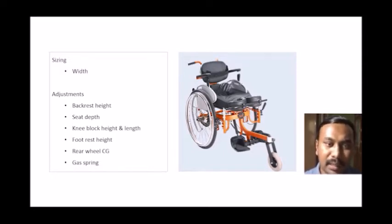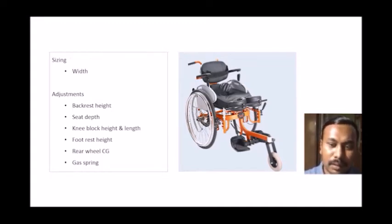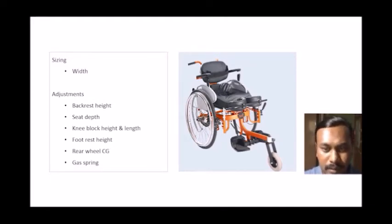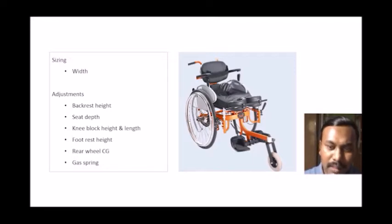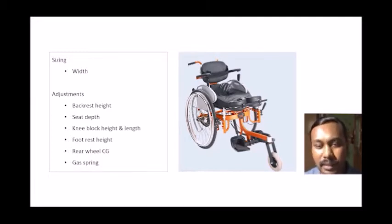We saw about sizes and adjustments: there are four different widths of the wheelchair — 15 to 19 inches — and multiple adjustments available. We can adjust the backrest height, seat depth, knee block length and height, footrest height, center of gravity, and gas spring. However, seat width alone is not adjustable — we have different sizes, so the first priority is finding the exact size that fits the person.